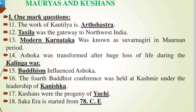___ was known as Suvarnagiri in the Maurya period. Answer: Today's modern Karnataka. 14th question: Ashoka was transformed after the huge loss of life during the ___ war. Answer: Kalinga war. ___ influenced Ashoka very much. Answer: Buddhism, or Gautam Buddha. The 4th Buddhist conference was held at Kashmir under the leadership of ___. Answer: Kanishka. Kushans were the progeny of ___. Answer: Yuchi tribe. Shaka era started from ___. Answer: 78 CE.